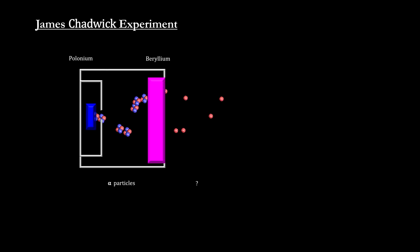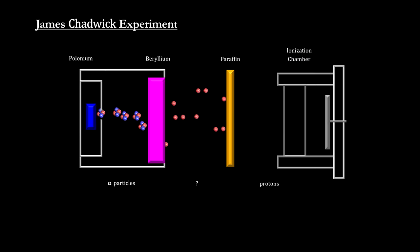At first, this radiation was thought to be gamma rays. But when this new radiation was used to bombard a hydrogen-rich substance like paraffin, a proton radiation was produced.